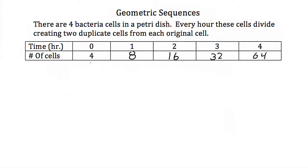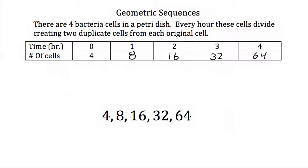Now these numbers 4, 8, 16, 32, 64 — if we write them in order, we make them a sequence. A sequence is just a bunch of numbers written in order. Now these numbers 4, 8, 16, 32, and 64 represent a geometric sequence. A geometric sequence is when all the numbers in order are multiplied by the same number.